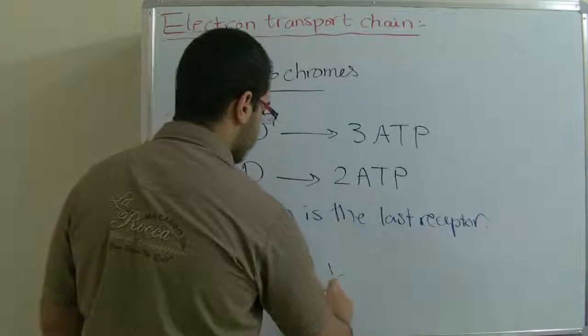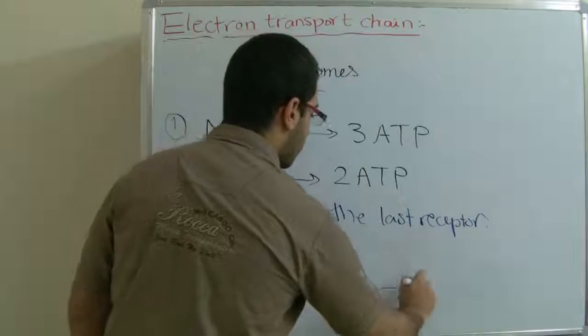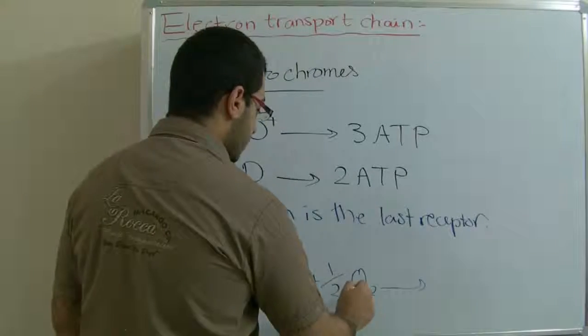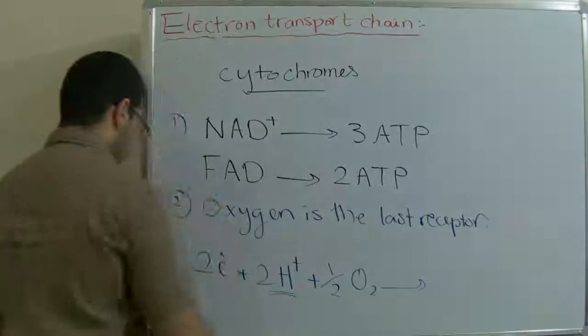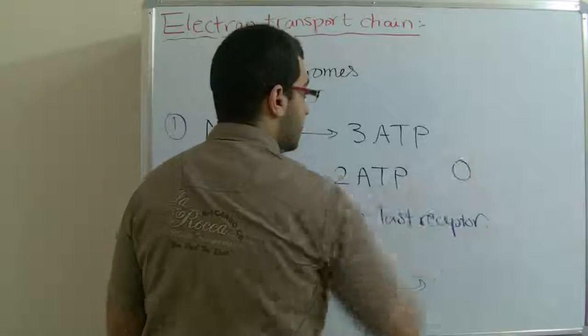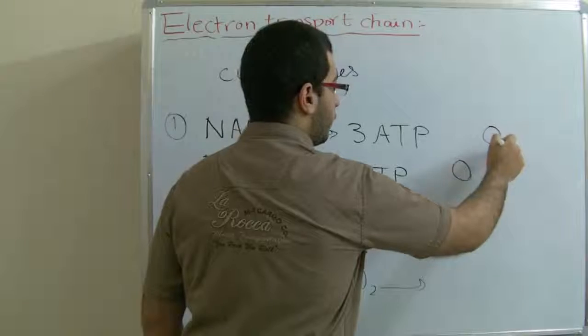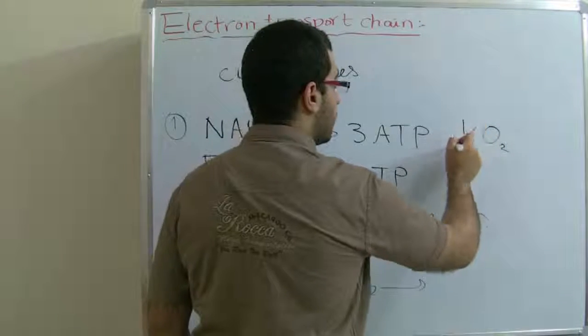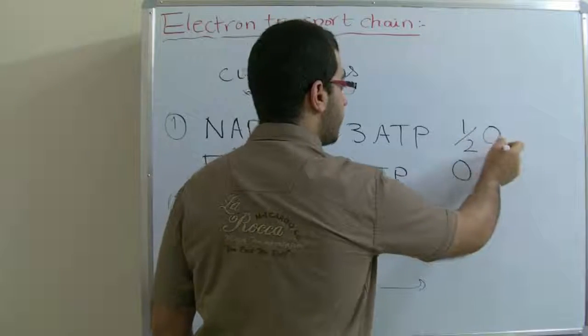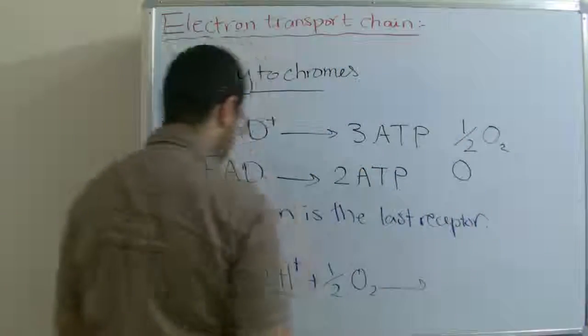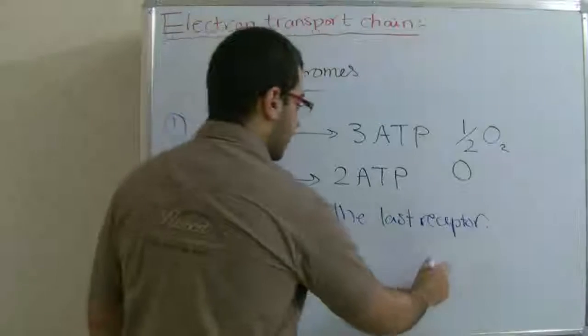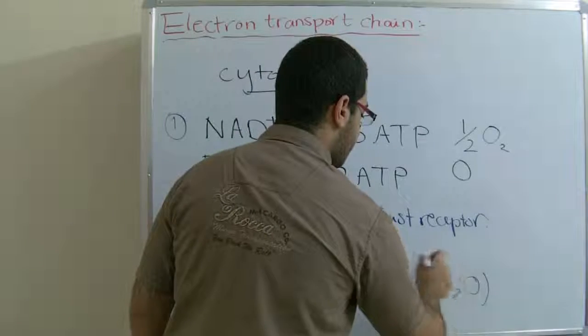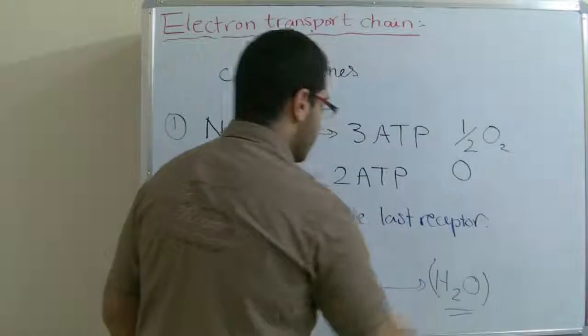And one oxygen molecule. We type half O2 because oxygen is a gas and we cannot type it this way. So we must write O2. So in order to express one atom, we type half here. So half by two gives only one oxygen atom. So this yields a water molecule.